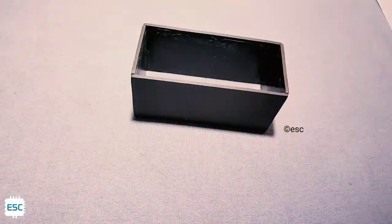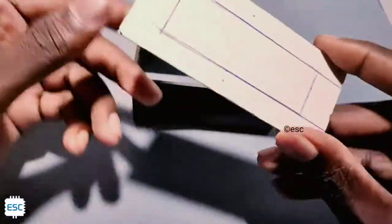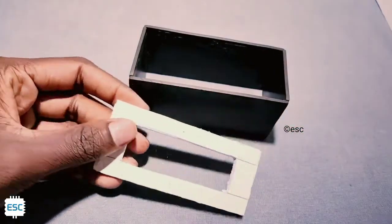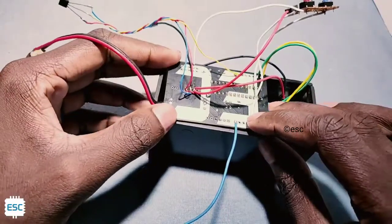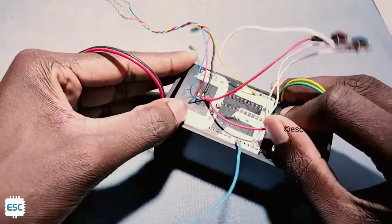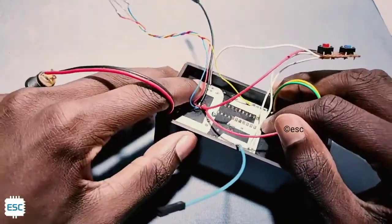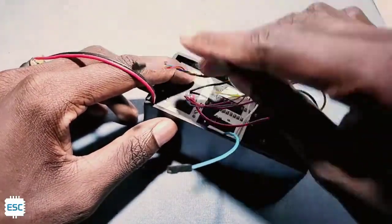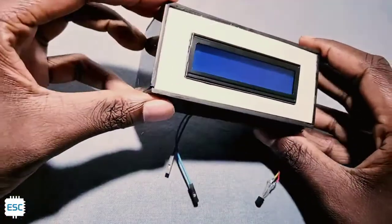And I also connected a female jumper wire for relay. After that I placed everything in the box. So this is the final look of our temperature controller.